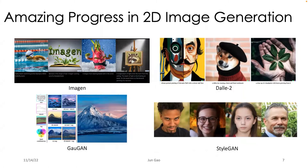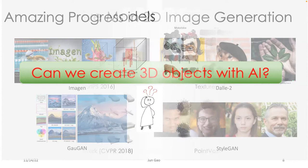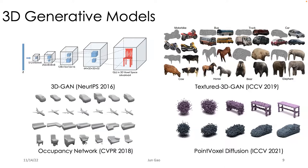On the other side, in recent years machine learning has achieved amazing progress in many domains, especially in 2D image generation. I'm showing four representative works: ImageGen, DALL-E 2, GauGAN, and StyleGAN, which allow users to create photorealistic images using controls like text, sketches, or semantic masks. However, these are still only 2D images — using AI to create 3D objects is far behind the progress in the 2D image domain, and my research is trying to develop AI tools for generating 3D objects.